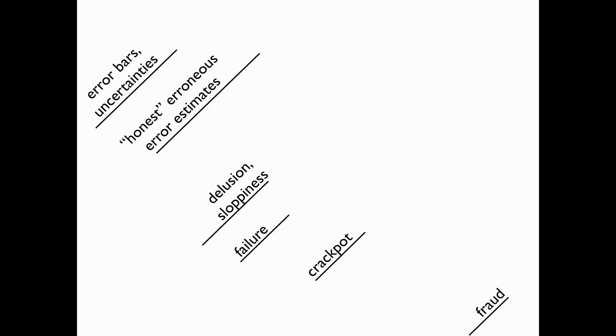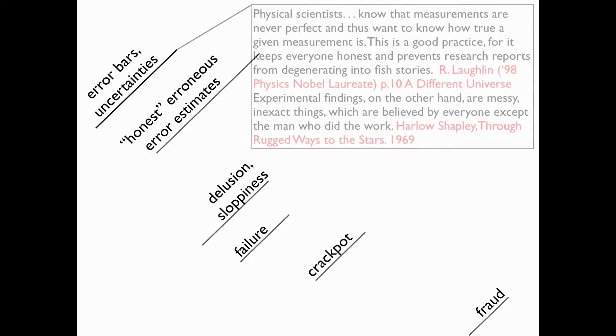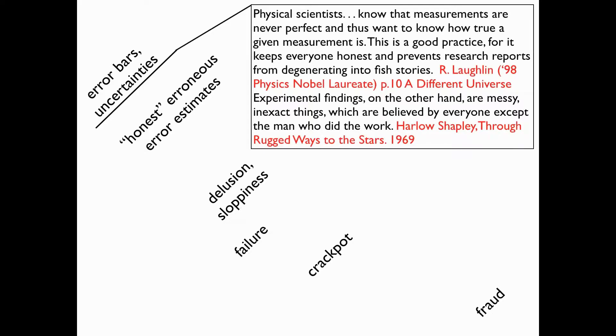If I look at what errors are in science — in physical sciences — there's a whole range of different topics that can be linked with errors, starting with the standard error bars and uncertainties of a measurement, which are crucial in understanding what a measurement means, to honest errors, to delusion, sloppiness, failure, crackpot theories, and, of course, outright fraud. I'm going to give a few examples for each of these.